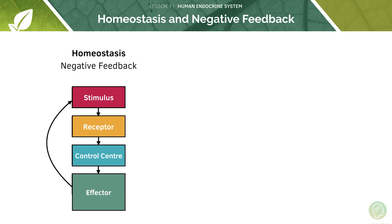So we have a stimulus — this could be low blood glucose for example. This is detected by receptors which feed back to a control centre, which then drives an effector response to increase your blood glucose levels back to the set point.